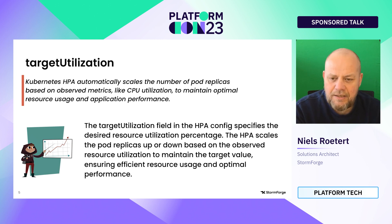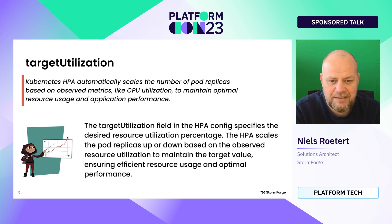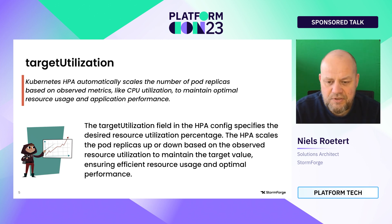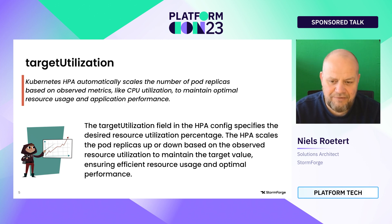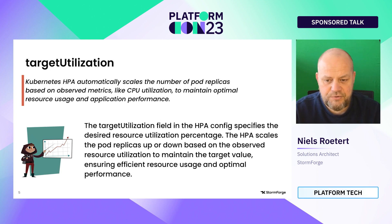Target utilization is one of the configuration items for HPA. If you set a target utilization of, say, 70%, the HPA will look at the average utilization of resources across different replicas of a microservice. If that reaches the target utilization, it will decide to scale out — not immediately, but after about five minutes by default if the resource usage stays elevated.